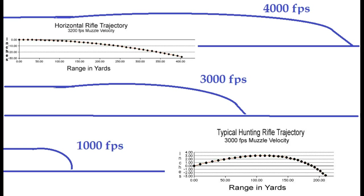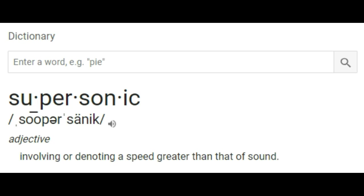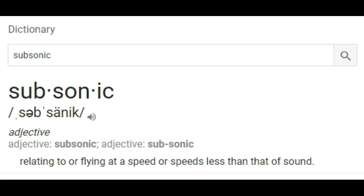I was talking to a buddy of mine and we started talking about distance and shooting and bullets losing speed as they fly. We got on the subject of transonic. Most of you know supersonic means you're going faster than the speed of sound. Normally with bullets, that's around 1,000 to 1,200 feet per second. If you're under 1,100 or 1,000, you're subsonic. If you're above that, you're supersonic.